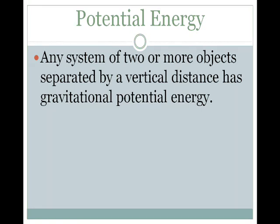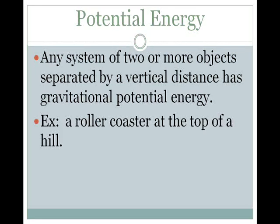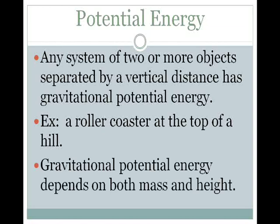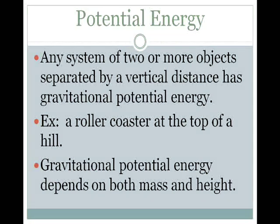Any system of two or more objects separated by a vertical distance has gravitational potential energy. So we have mechanical energy, and mechanical energy has two types: potential and kinetic. Potential energy has two forms: elastic potential energy and gravitational potential energy. An example of gravitational potential energy is a roller coaster at the top of a hill before it starts descending — that means the roller coaster has a large amount of potential energy. Gravitational potential energy depends on the mass of the object and the height of the object.